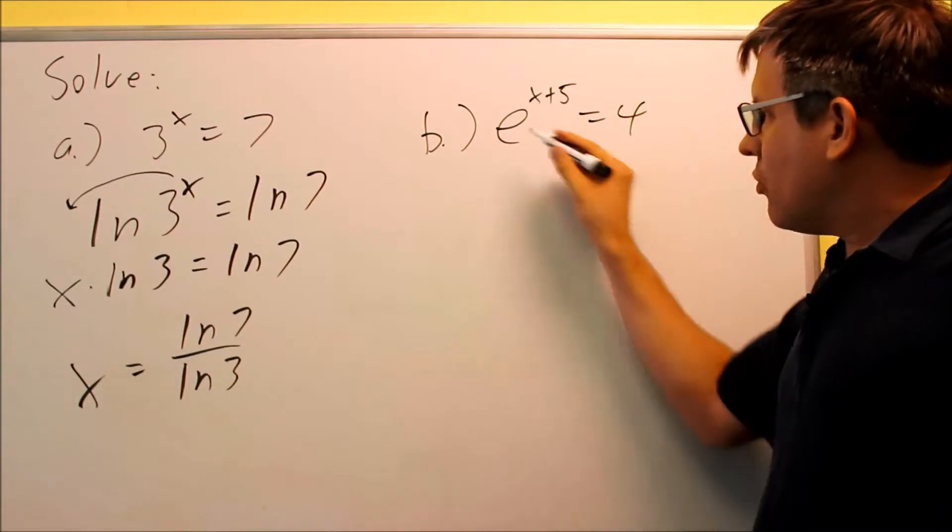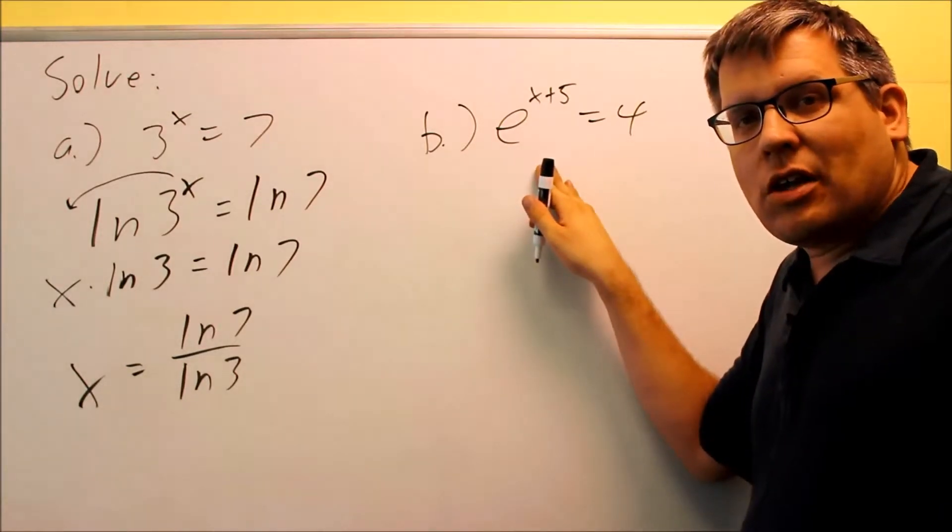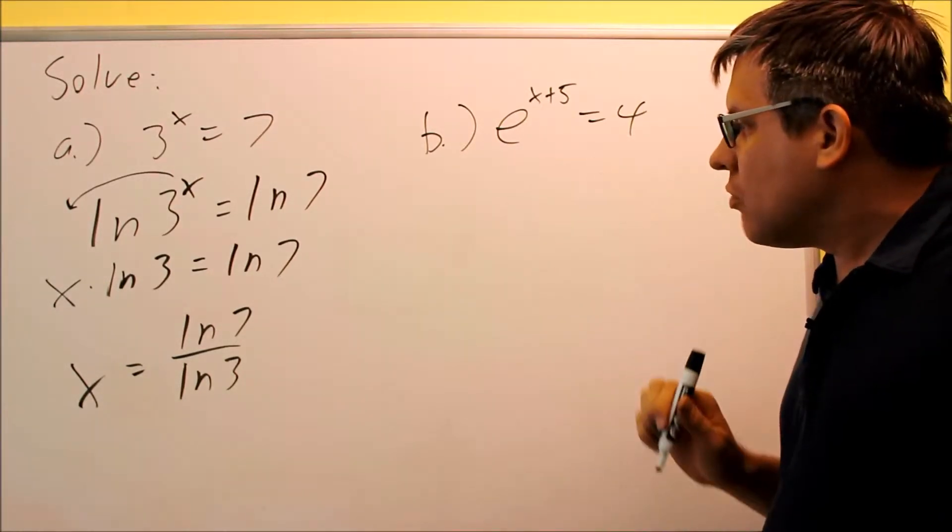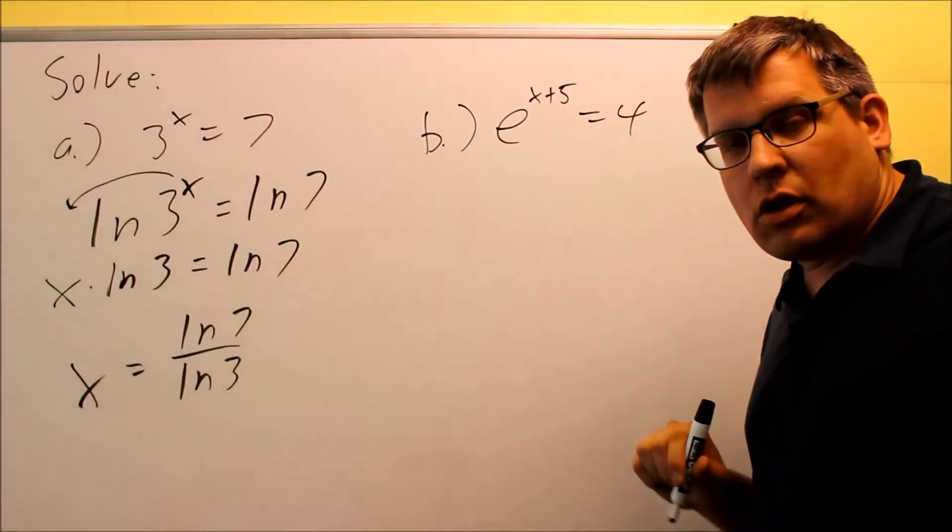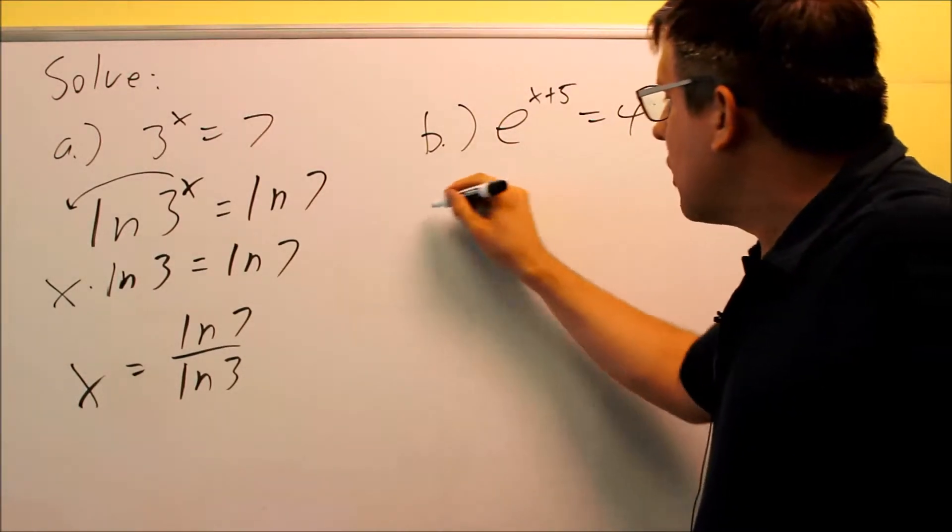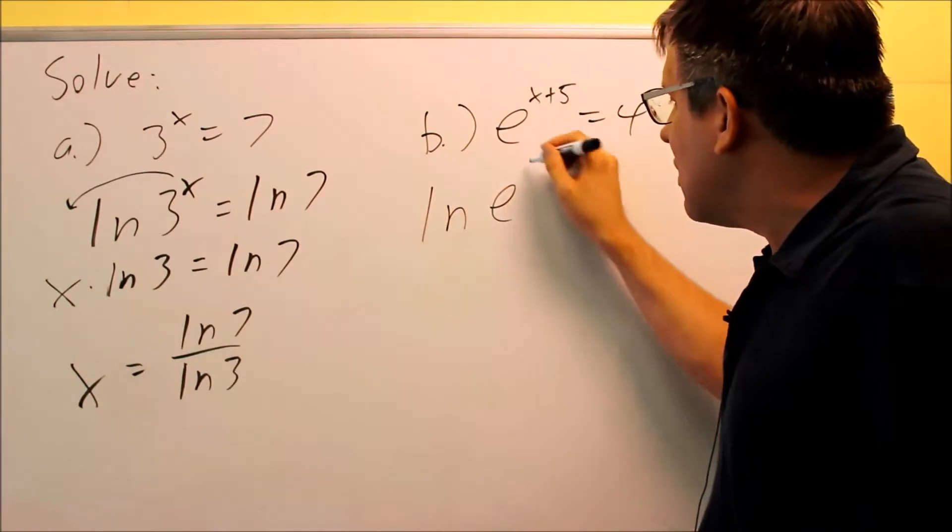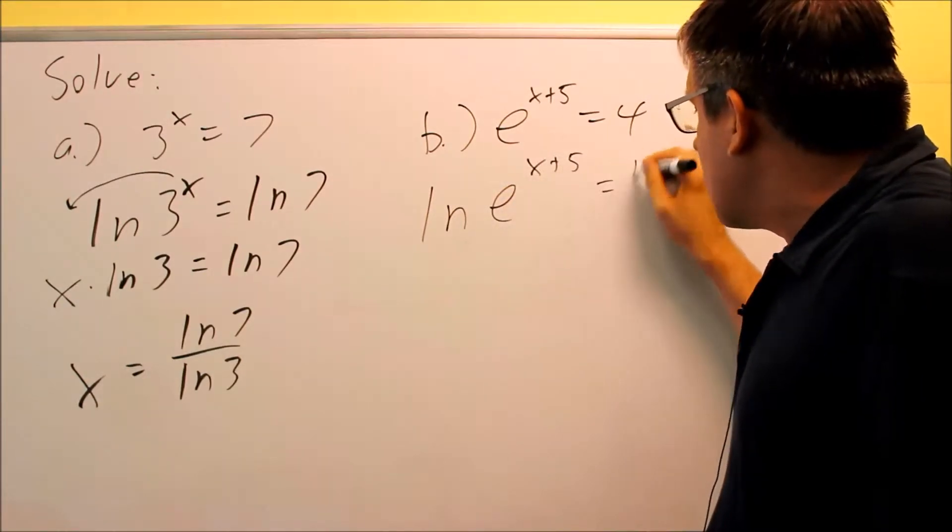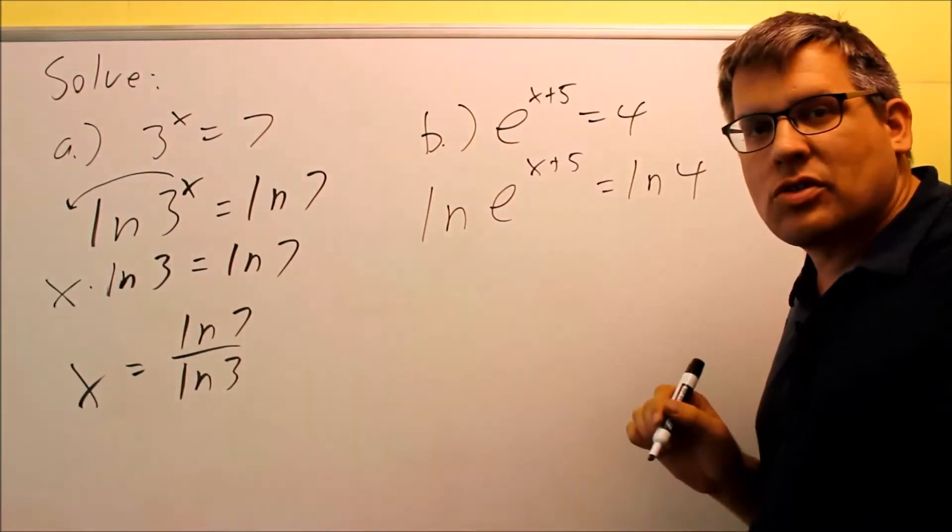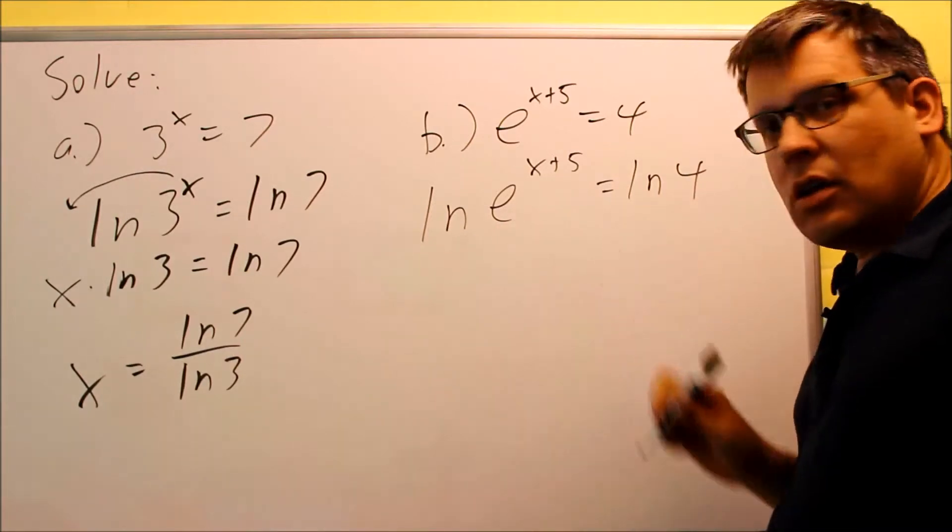Let's take a look at this one. If you have a problem that has an e for one of the bases, you definitely want to apply natural log instead of a regular log. The reason is because if you put an ln and an e together, those end up canceling each other out. So we're going to do exactly the same thing as before—I'm putting an ln on both sides.